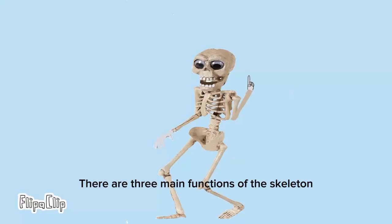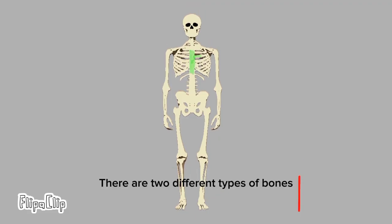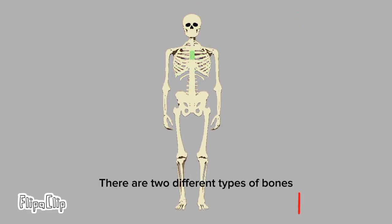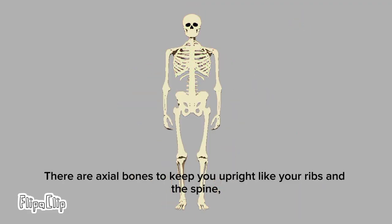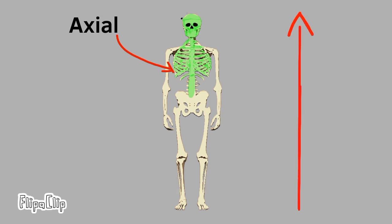There are three main functions of the skeleton. Firstly, to support the body and facilitate movement. There are two different types of bones: axial bones that keep you upright, like your ribs and the spine.